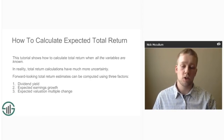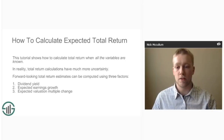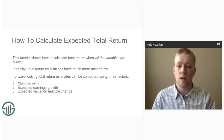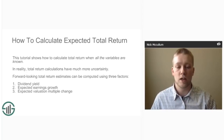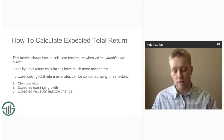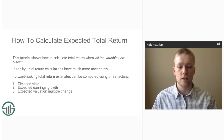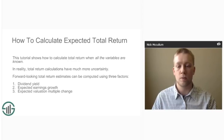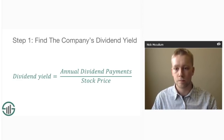In real life, expected total returns are composed of three things: a company's dividend yield, its expected earnings growth, and the expected changes to the company's valuation multiple. Each one of these individual components is complex on its own, so to make sure you fully understand this, we're going to use an example of the Coca-Cola Company.